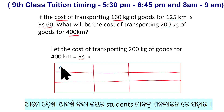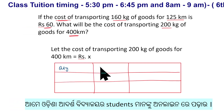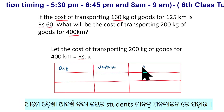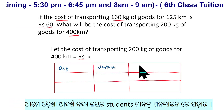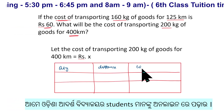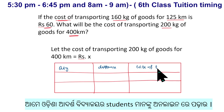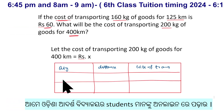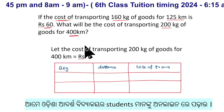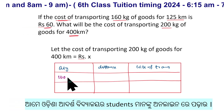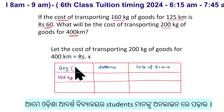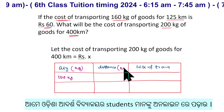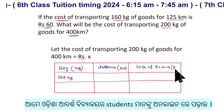We set up a table with the following columns: quantity in kg, distance in km, and cost in Rs.